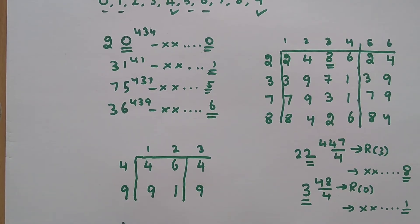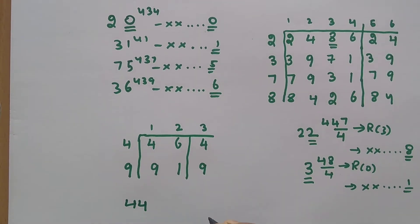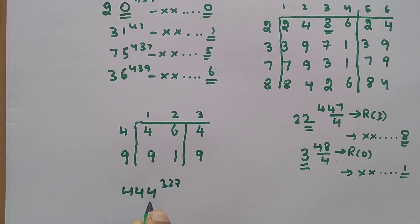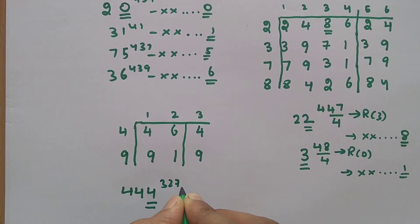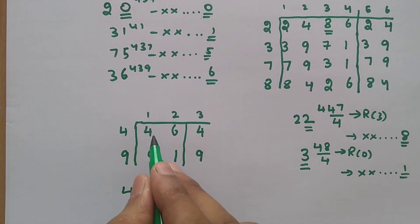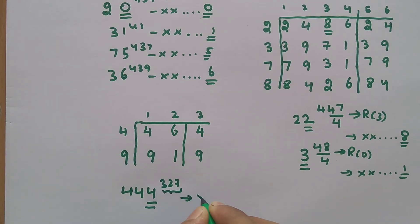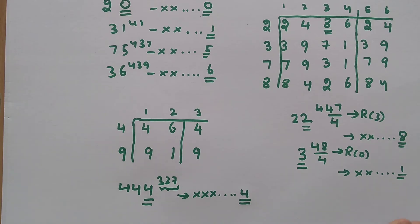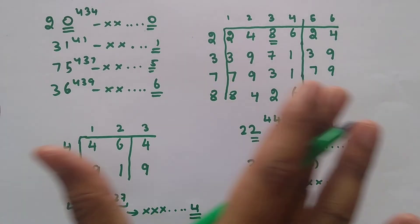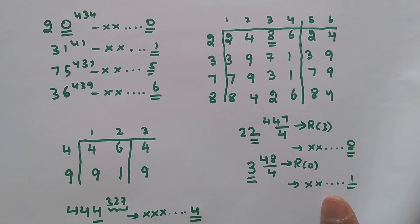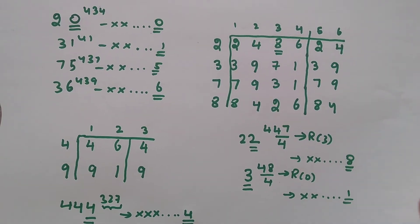For example, 444 power 327: the last digit is 4 and the power 327 is an odd number. So 4 raised to an odd power gives 4 as the last digit. This process of using cyclicity allows us to quickly solve these problems, and we are now going to apply it to the main example.